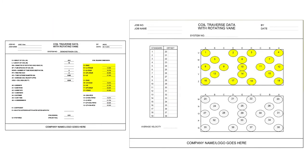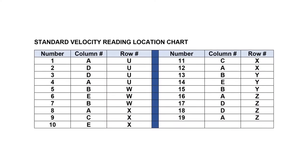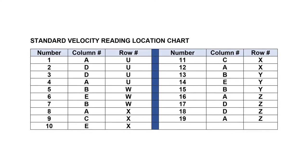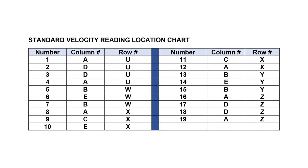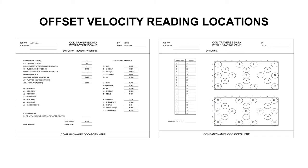Use this method referencing the coil reading dimensions for the standard velocity reading locations, intersections 1 through 19. This chart documents the intersections for the standard velocity reading locations 1 through 19.